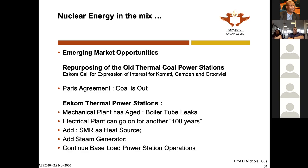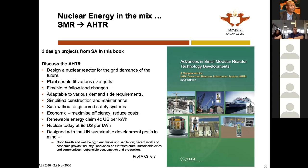For example, boiler tube leaks cause aging in coal plants. Just bring along a small modular reactor, add another steam generator, and continue baseload power. That's the concept.